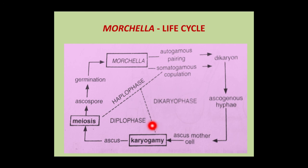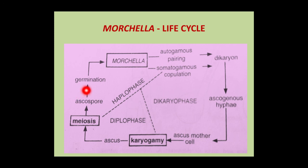After karyogamy, the ascus mother cell elongates to become an ascus. In the ascus, meiosis occurs, forming four nuclei, which again divide mitotically to form eight ascospores. These ascospores are then liberated by wind and germinate on a suitable substratum to form new mycelium of Morcella.